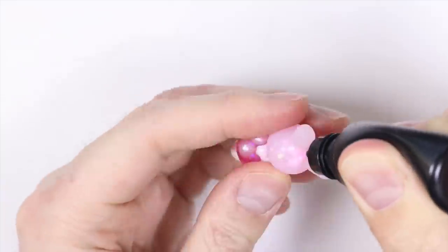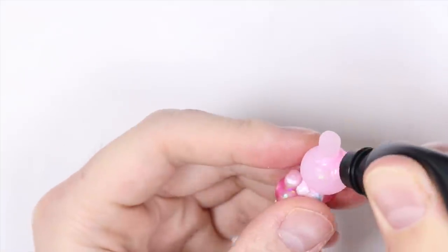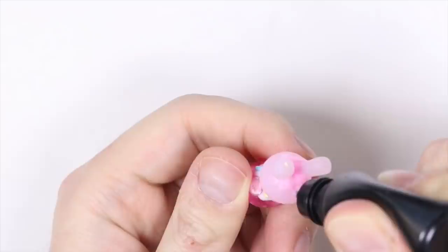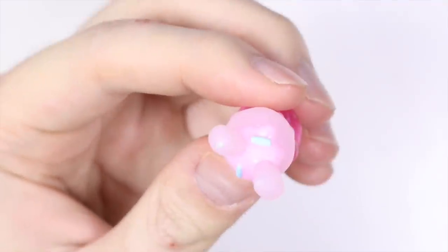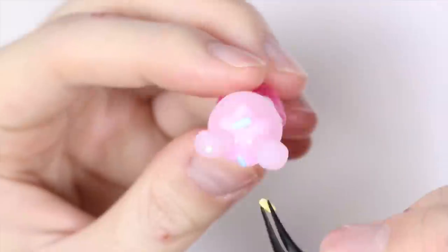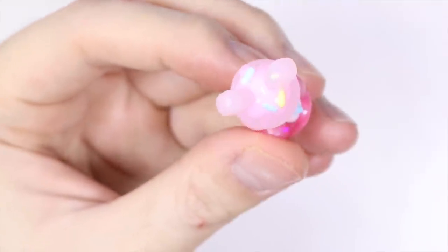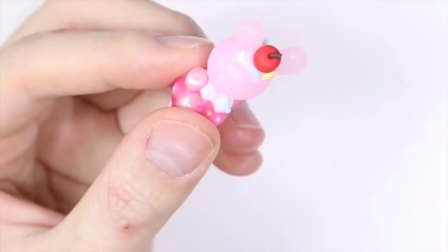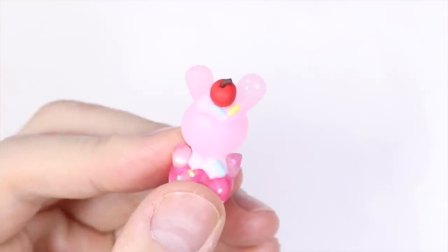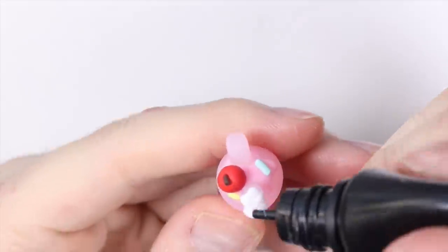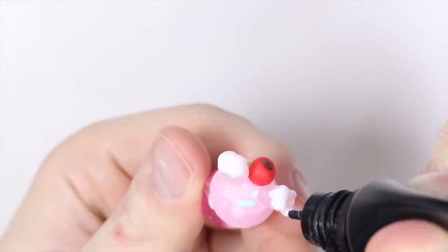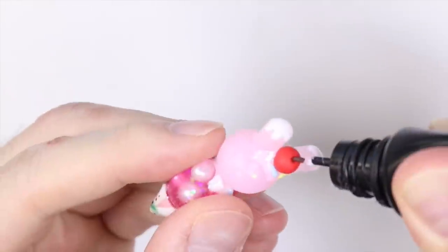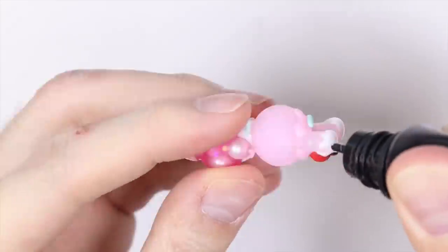And then it was the fun part to decorate the bunny. So I added some pink UV resin mixture onto the bunny head along with some sprinkles. And we can't forget the cherry on top. And I decided to add some white UV resin onto the ears as well and added some more sprinkles on there just to make it super decorated.